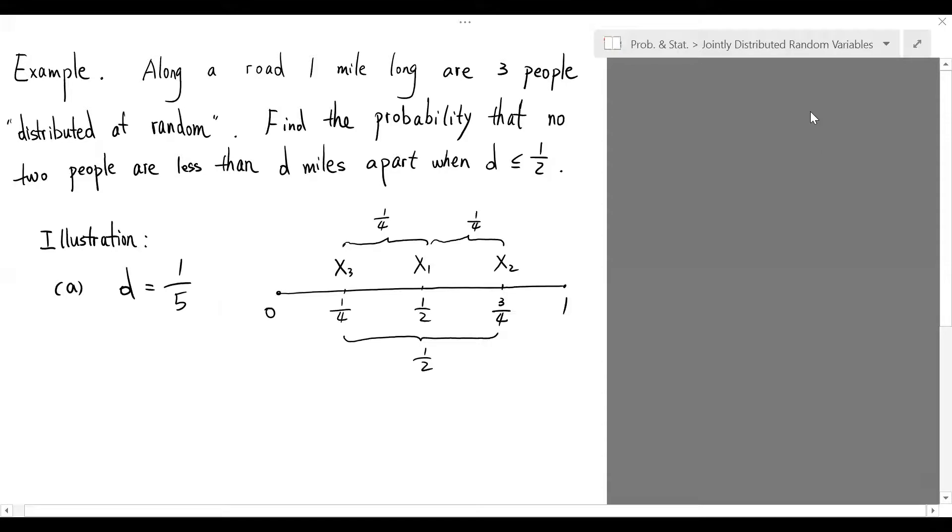Let's illustrate the idea behind this problem. In the first figure, we use capital X1, X2, and X3 to denote the location of these three people. In this particular distribution, the distance between those three people are 1 fourth, 1 fourth, and 1 half.